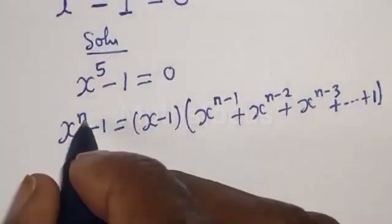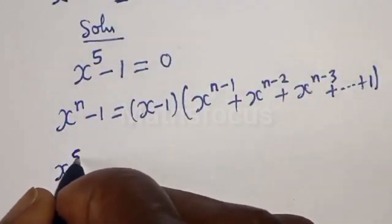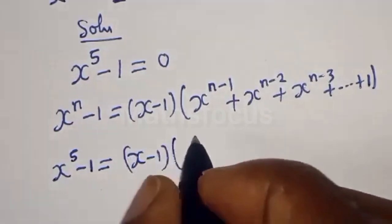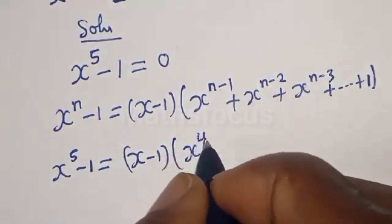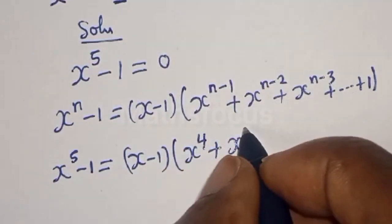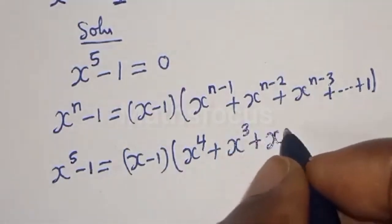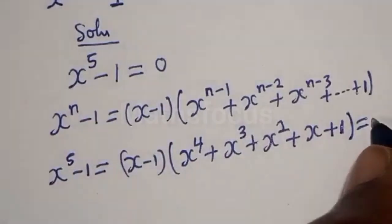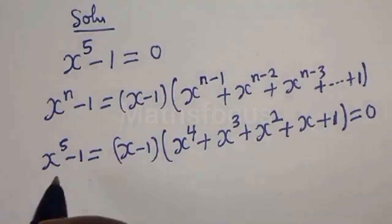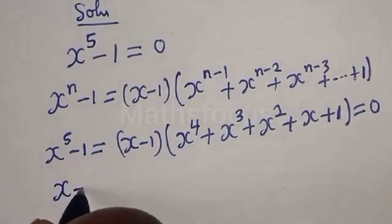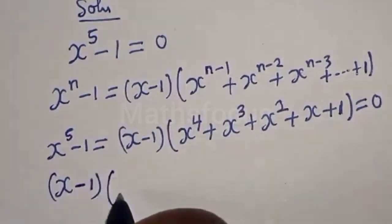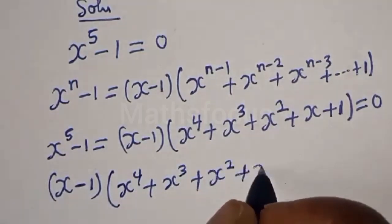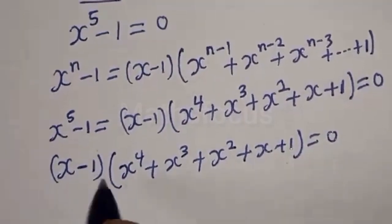...plus 1. Now x raised to power 5 minus 1 is equal to x minus 1 bracket x raised to power 4 plus x raised to power 3 plus x raised to power 2 plus x plus 1, which is equal to 0. Now we have x minus 1 bracket x⁴ plus x³ plus x² plus x plus 1 equals 0. There are two cases here.